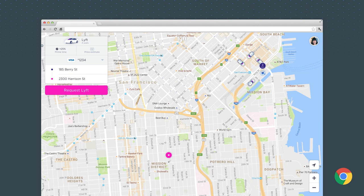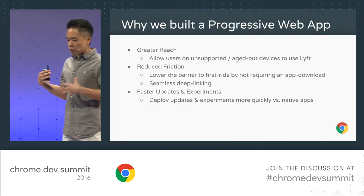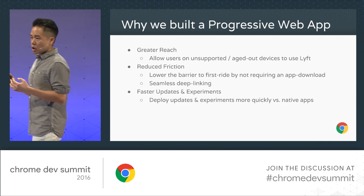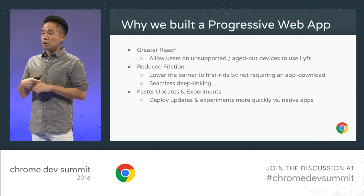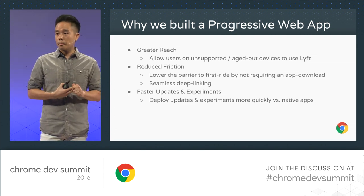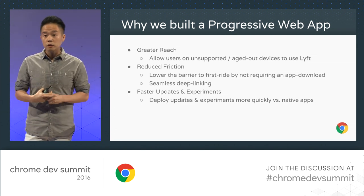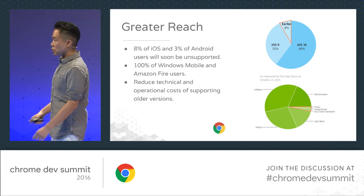We're pretty happy with the work. This is a desktop view of the app that we built. Our hackathon project gathered enough internal excitement that we said, why don't we go out, try to prioritize this, and see if our users would also be excited. A PWA could be a great supplement to native apps for various reasons: number one, greater reach; number two, reduce friction; and number three, faster deploys and experimentation.